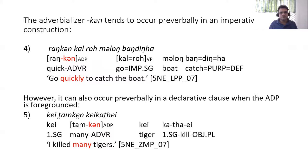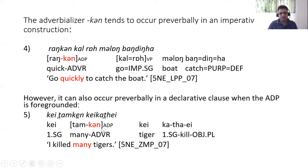The adverbial phrase can occur pre-verbally in an imperative construction, as in: rankan kalra malang bangdingha. Similarly, in a declarative construction the adverbial phrase can occur pre-verbally, particularly when it is foregrounded for pragmatic functions. So ke tamkan ke katai — 'I killed many tigers.' Since 'many' is emphasized, it is foregrounded, so the verbal phrase tamkan comes in pre-verbal position.